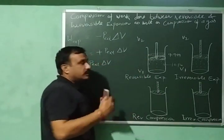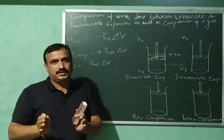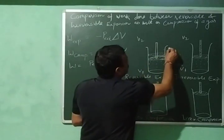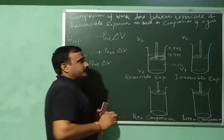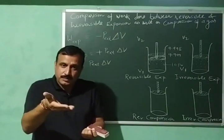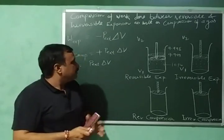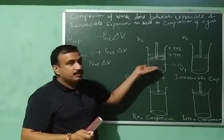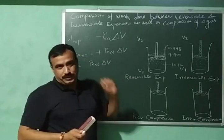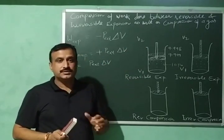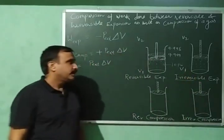To further expand the gas, I decrease the external pressure very slightly again — suppose to 9.998. The gas expands again very slowly. By carrying out these very slow steps, I will reach the final volume V2. This is how reversible expansion takes place.